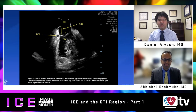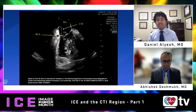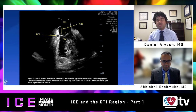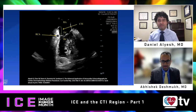Welcome to Heart Rhythm TV in Denver, Colorado. I'm Dan Alius with another episode of the ICE Image of the Month. This episode we're going to focus on an often underestimated and underappreciated region: the CTI, our cavotricuspid isthmus. We are very happy to be joined today by Dr. Abhishek Deshmukh of the Mayo Clinic in Rochester.